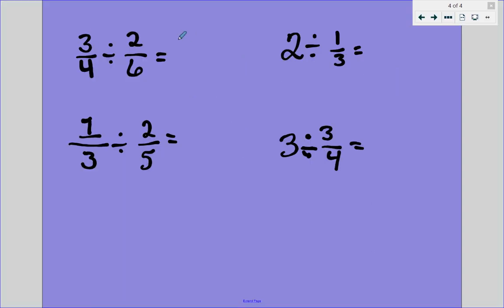So 3 fourths divided by 2 sixths. 3 fourths is going to stay the same. Instead of divide, we're going to multiply. Now we take the reciprocal of the second number. So instead of 2 over 6, it's 6 over 2. Then we do our multiplication. 3 times 6 is 18, over 4 times 2 is 8. So we have 18 over 8, which is 2 and 2 eighths, or we could even break that down to 2 and 1 fourth.